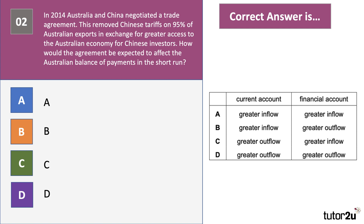Question two: in 2014 Australia and China negotiated a trade agreement that removed Chinese tariffs on 95% of Australian exports, in exchange for Chinese investors having greater access to the Australian economy. How would the agreement be expected to affect the Australian balance of payments in the short run? There are your four options A, B, C and D — press pause and have a go at question two.